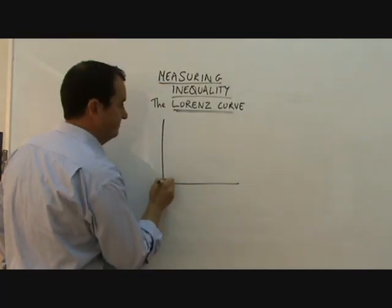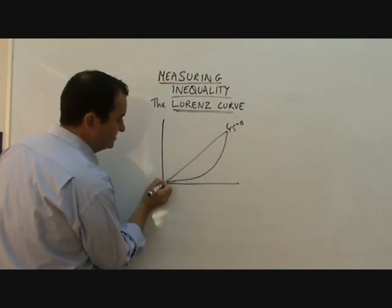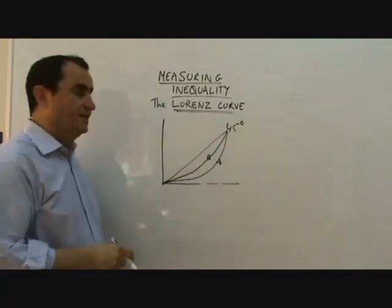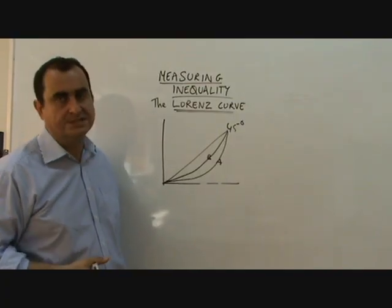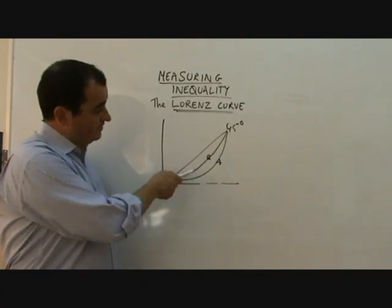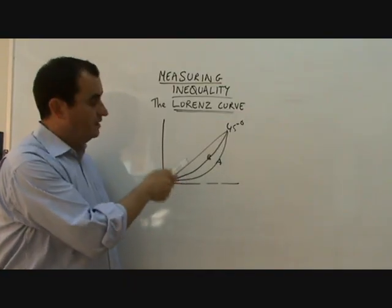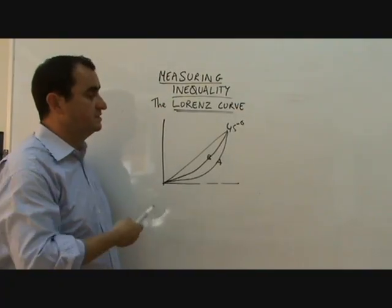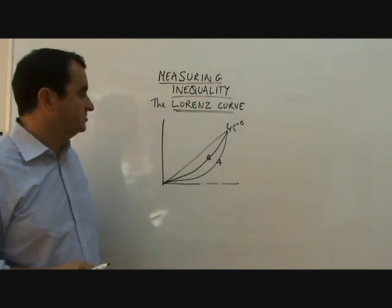And I'm just going to sketch one now. There's the 45-degree line. Here is the Lorenz curve for one particular country. Here is the Lorenz curve for another country. Let's call this country A and this country B. It's clear that with the Lorenz curve technique, we can compare the equality of the distribution of income in different countries. It may be that even though B has a more equal distribution than A, it may be that B is a poorer country. It doesn't mean that B is a richer country. It just means that what income there is in country B is allocated more equally than in country A.